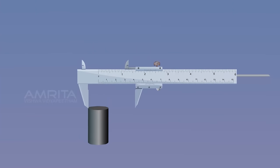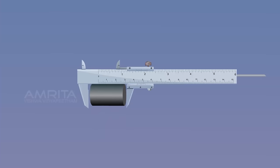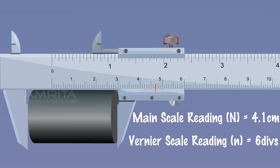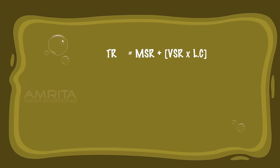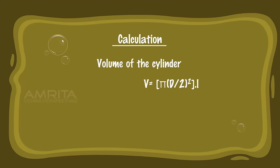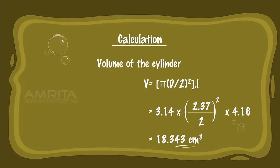Now place the cylinder lengthwise in between the outer measuring jaws of the vernier calipers and note its MSR and VSR readings. Calculation: TR = MSR + (VSR × least count) = 4.1 + (6 × 0.01) = 4.16 cm, so L = 4.16 cm. Volume of the cylinder: V = π × (D/2)² × L = 3.14 × (2.37/2)² × 4.16 = 18.343 cm³.